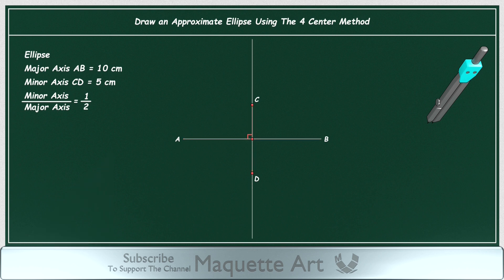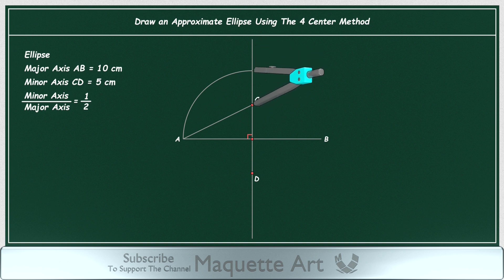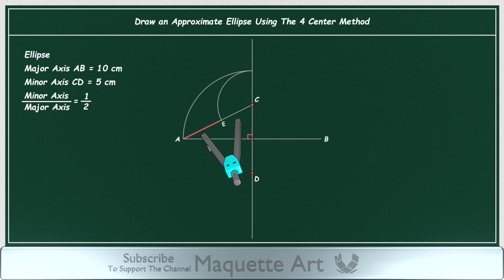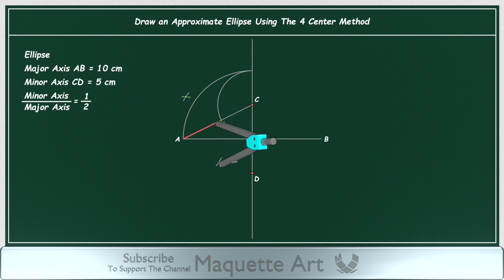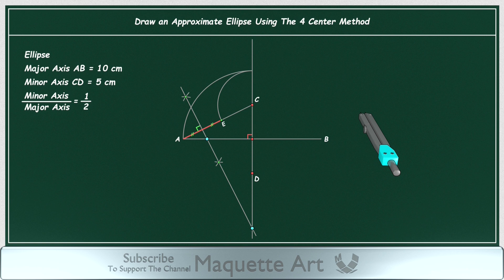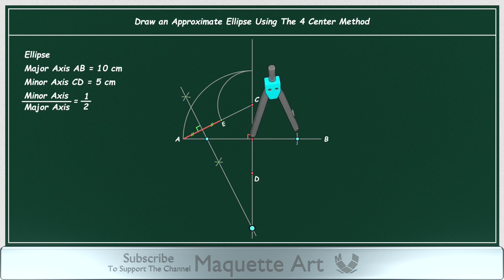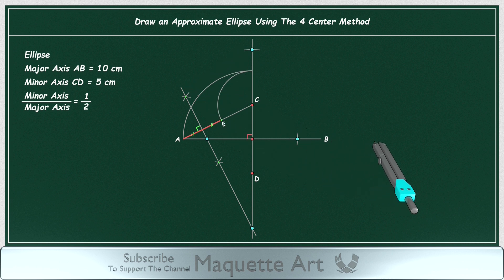Now extend line CD on both sides. Now draw a perpendicular bisector to line AE using the method I just explained. Extend this line until it intersects with the extension of line CD. This point is one of the four centers required to draw the ellipse. We want to mirror it to the right side of the ellipse, then to the top side of the ellipse. Now we have the four centers required to draw the ellipse.